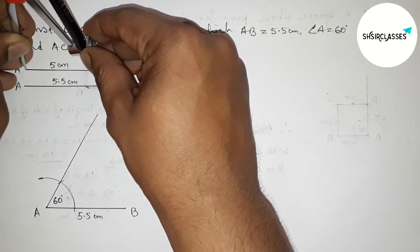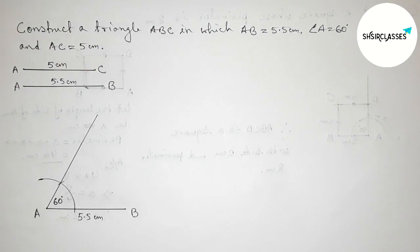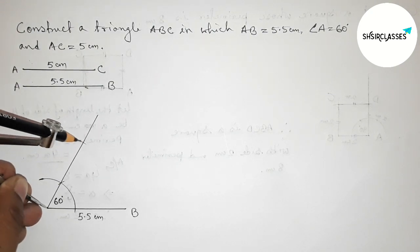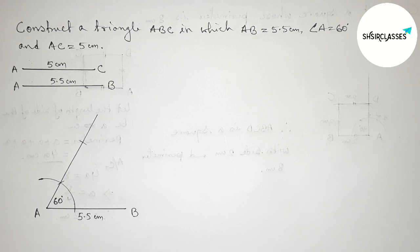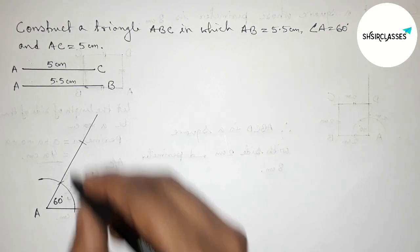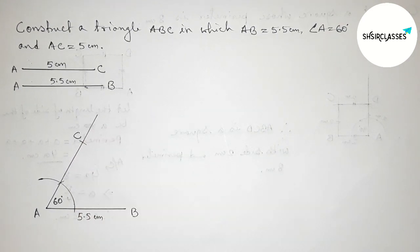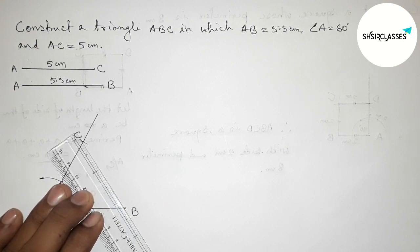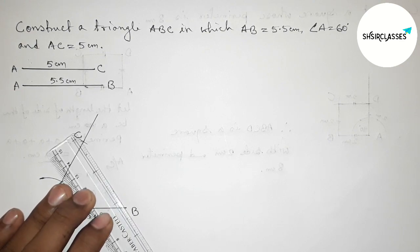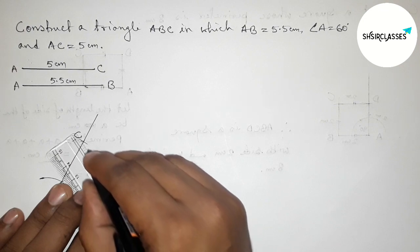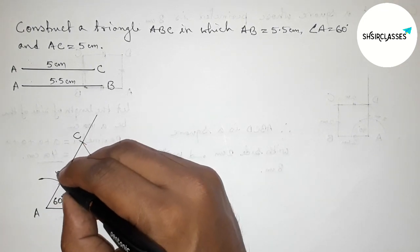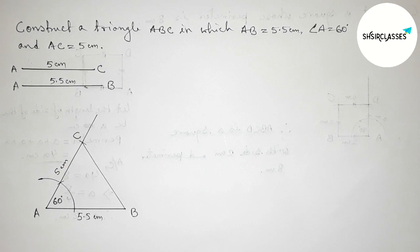Next, taking the length AC equals 5 centimeter with the help of compass. Putting the compass on point A and cutting an arc to mark point C. Then joining the side BC to get triangle ABC. So AC equals 5 centimeter.